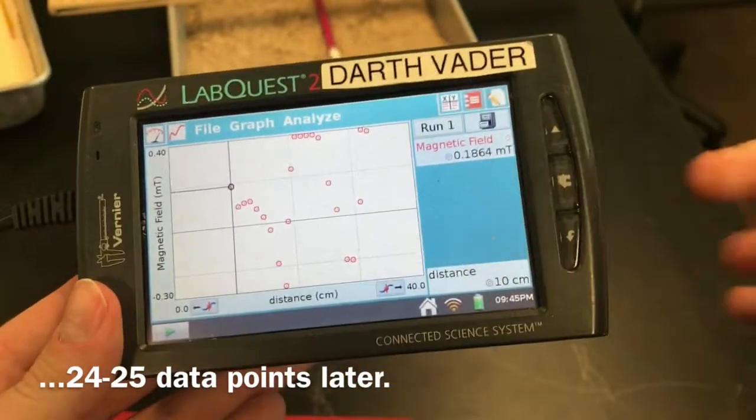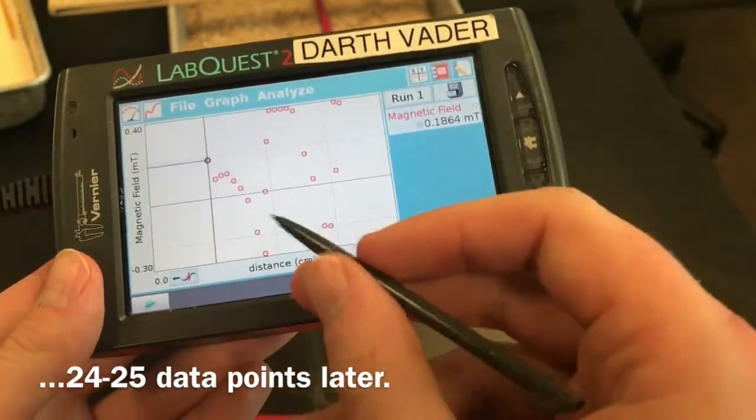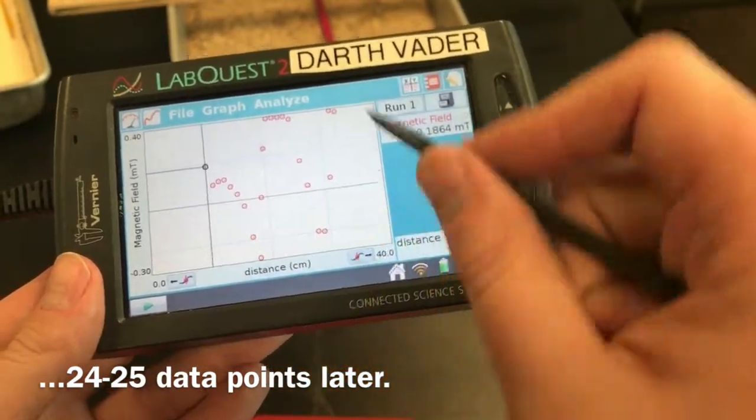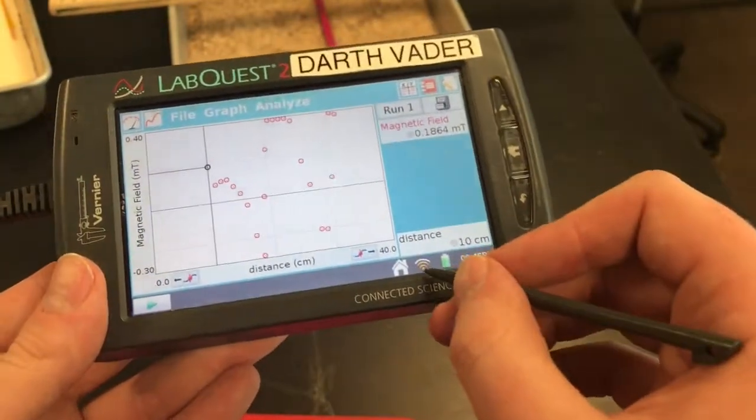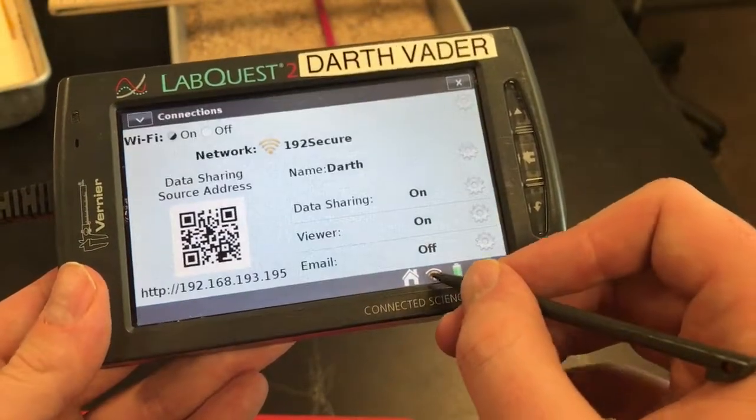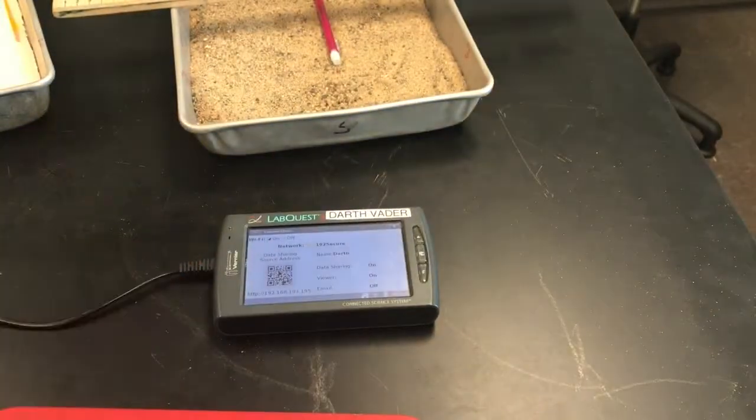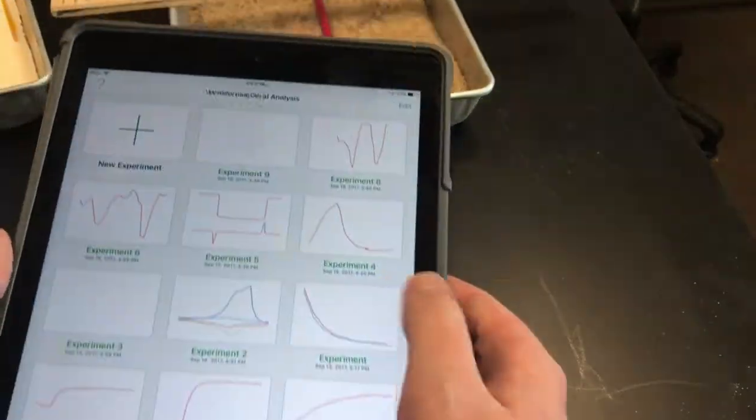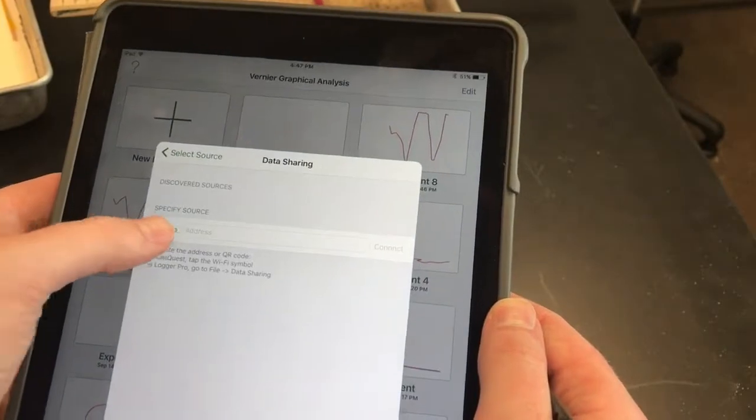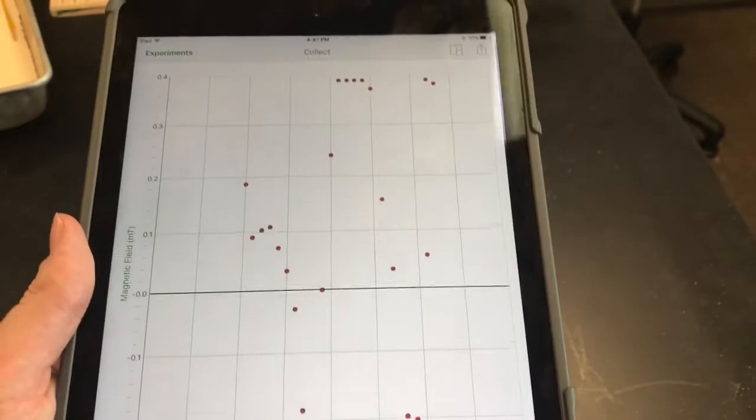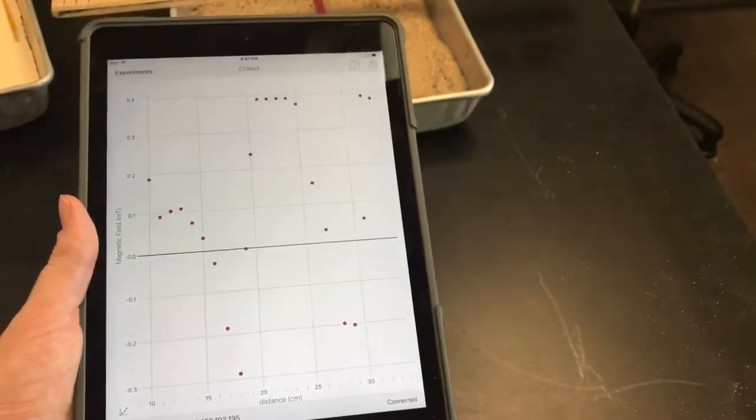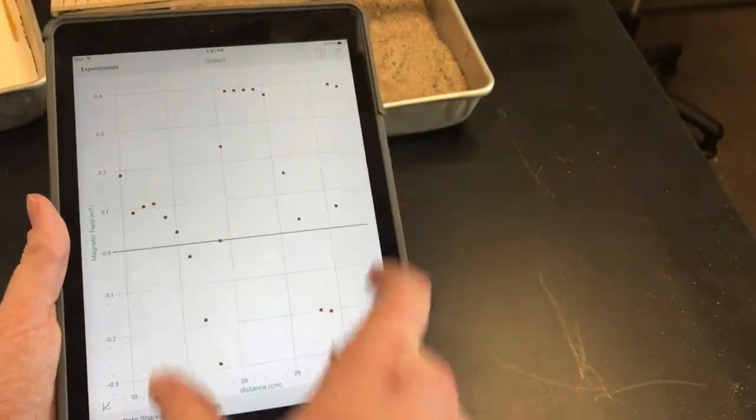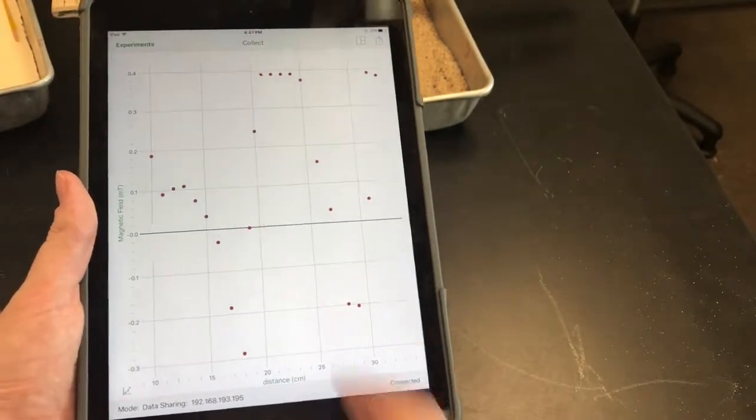Okay, so I ran my 24 points, 24, 25 points. It ended up looking something like this. So your data should look somewhat similar. I'm going to connect this to a graphical analysis on my iPad right away. Alright. Again, you can double tap the screen here. It just fits your data to one page really nice like that.